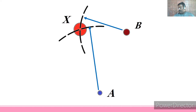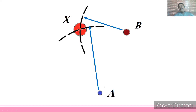To define a point X, it can be defined by two reference points A and B. An X point can be defined by A and B.